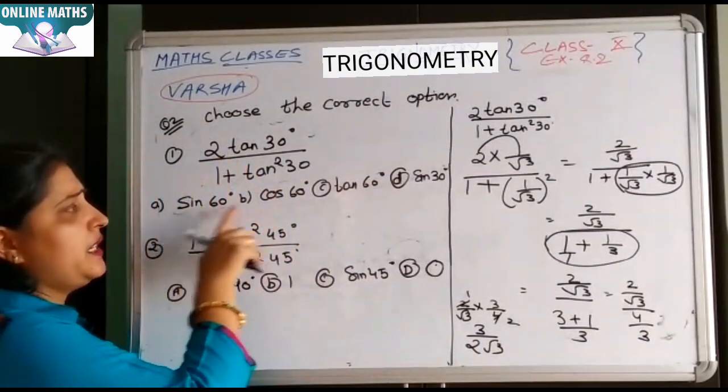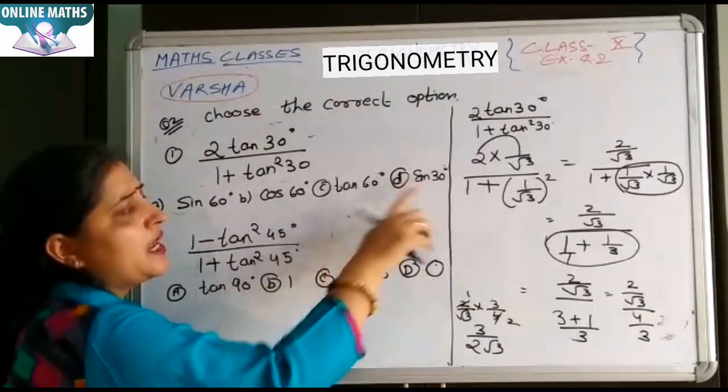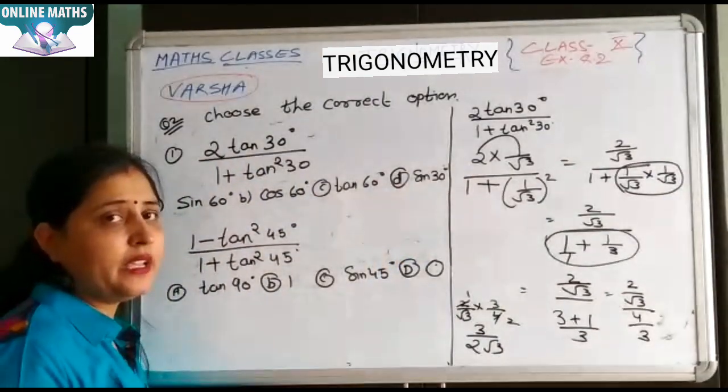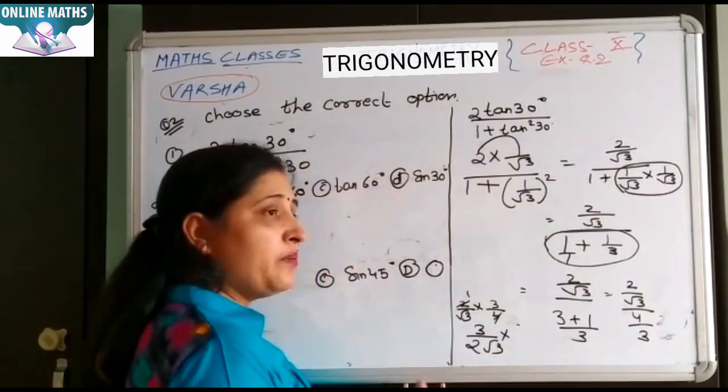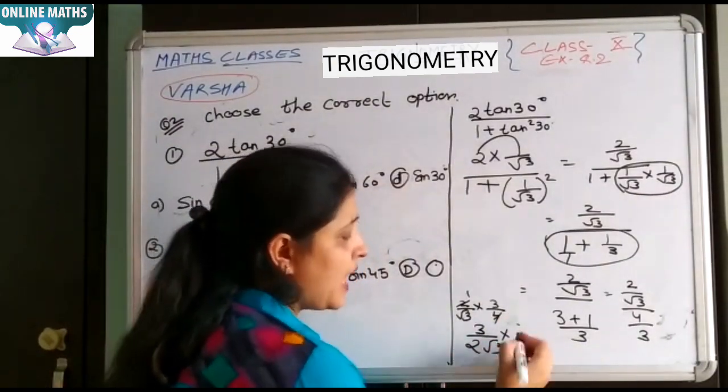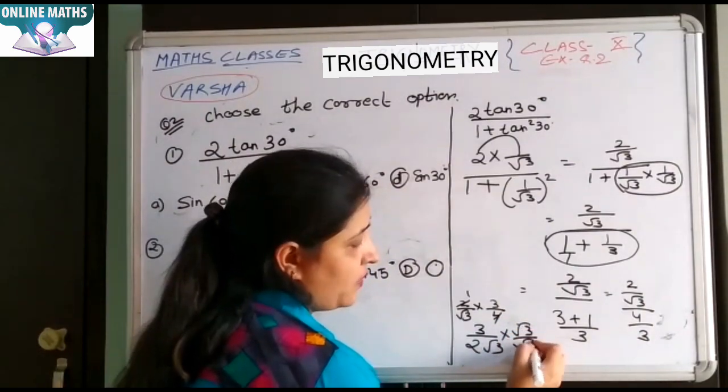Kisi ki value hai? Sine 60, cos 60, tan 60, ya sine 30. Kisi ki bhi value nahi hai. Aap isko next step mein rationalize kiji. Rationalize karo it means multiply kiji. Kis se multiply karo aap? Root 3 se. Root 3 by root 3.